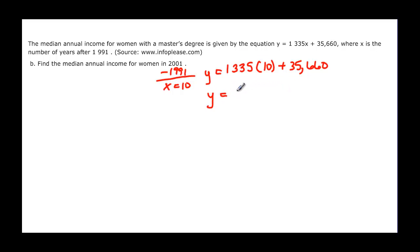So we can say that y equals 13,350 plus 35,660. And if we add those together, we get $49,010.